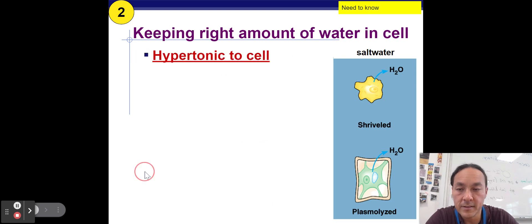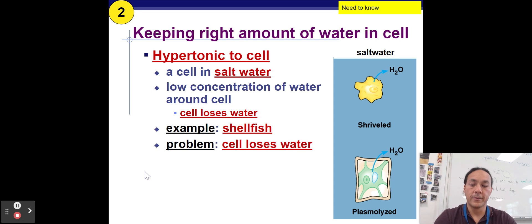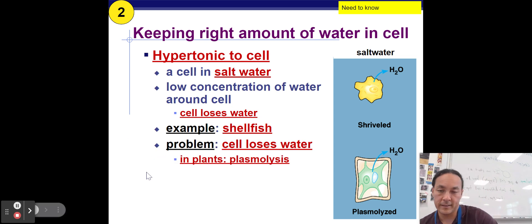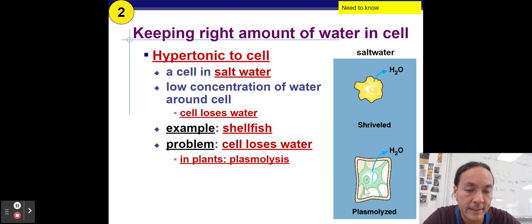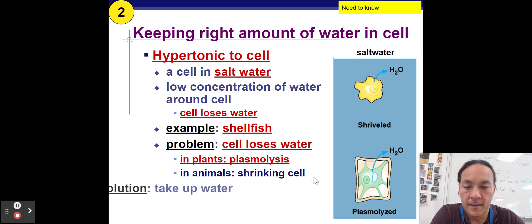Keeping the right amount of water in the cell, let's look at hypertonic. So if you were to put a cell in salt water, it would lose water quickly and it would shrivel up and it could die. The plant can also die. It's going to lose water. It's going to wilt and it could die as well.